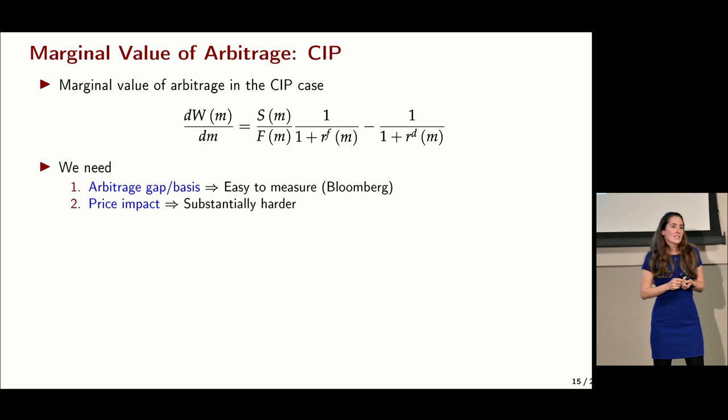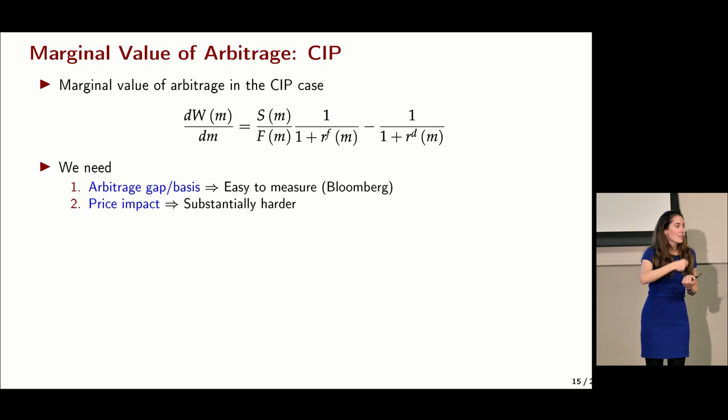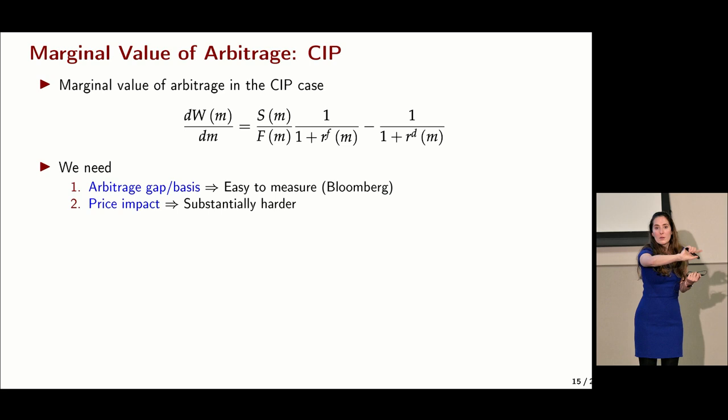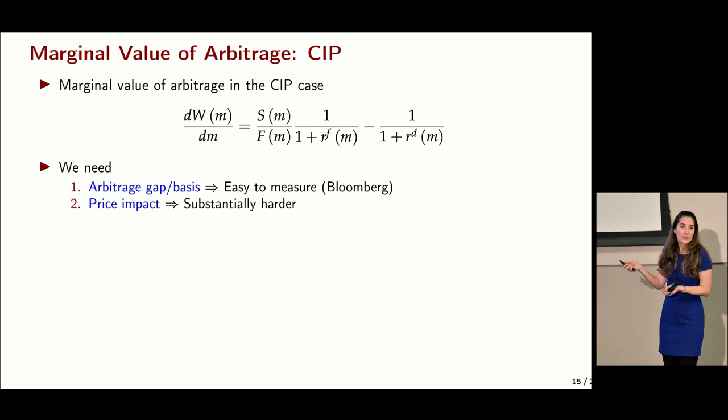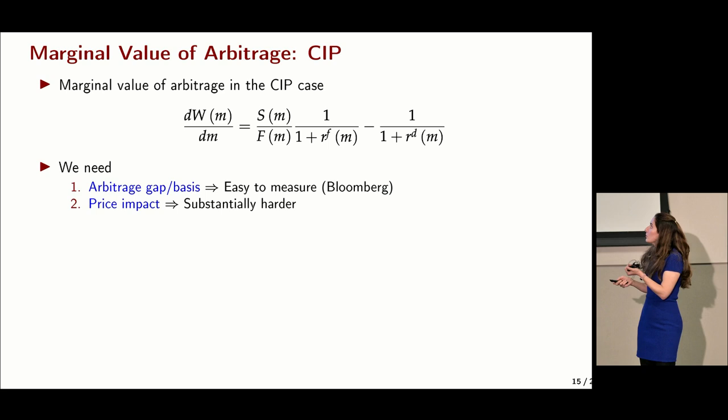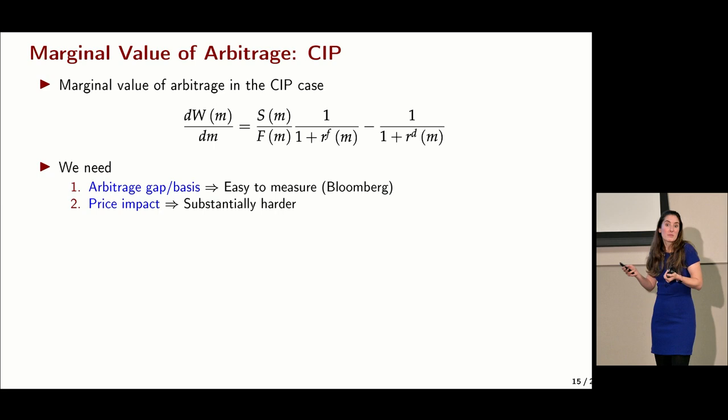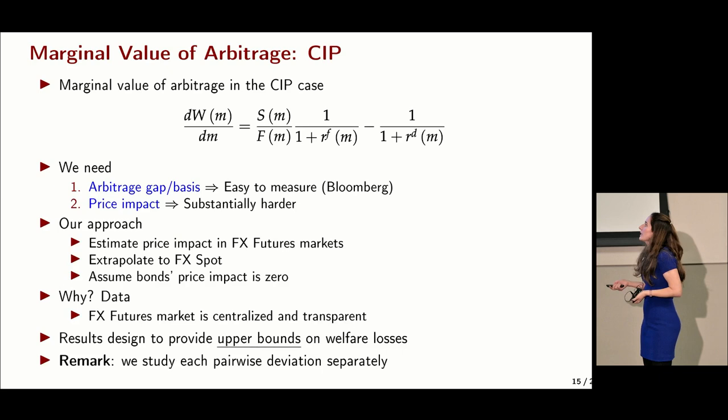The CIP arbitrage idea is: borrow in dollars, convert dollars to euros, lend euros, then buy dollars in the futures market when repayment is due. To compute our statistic we need the average gap or basis — easy to measure from Bloomberg — and the price impact, which is substantially harder to get and where most of our empirical work goes.